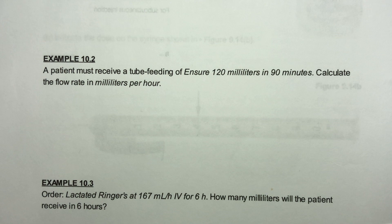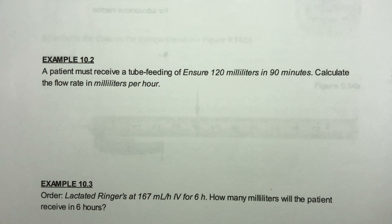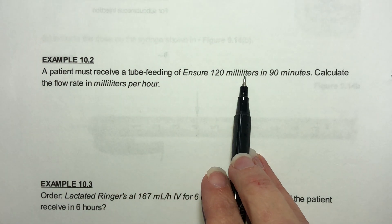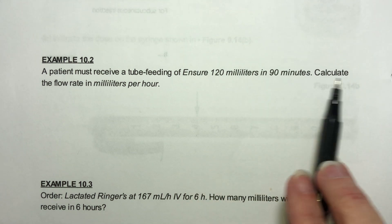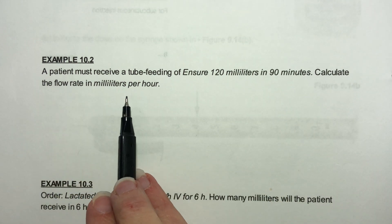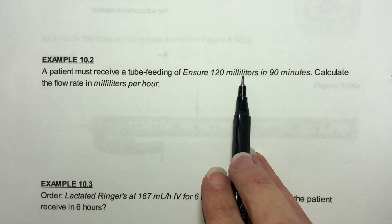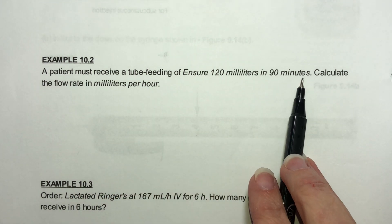Number two. A patient must receive a tube feeding of Ensure 120 milliliters in 90 minutes. Calculate the flow rate in milliliters per hour. Milliliters we're good there but here we have hours here we have minutes.